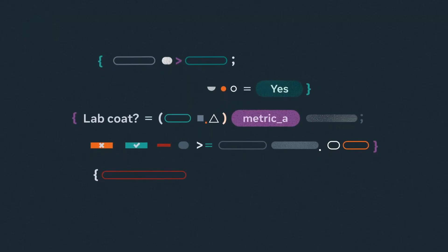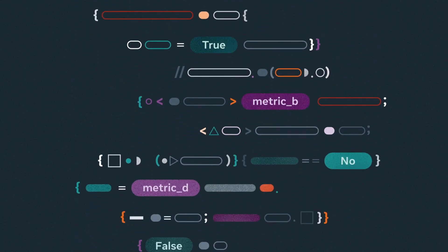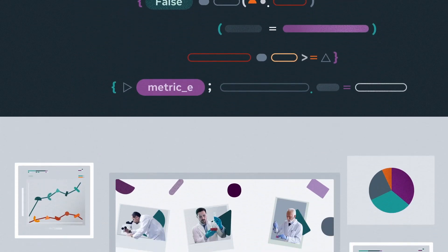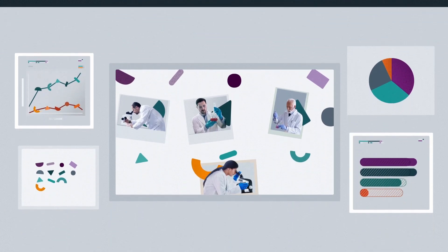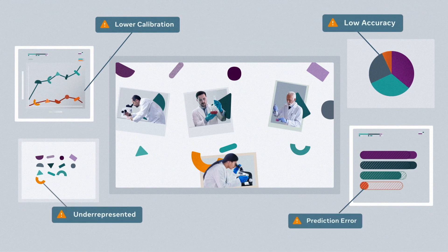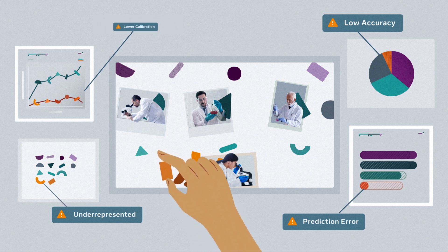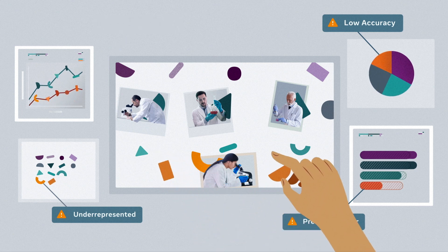Because there's no single fairness metric that can work for every type of AI, it can be challenging to find flaws in the data set. Fairness Flow helps Facebook engineers find the right measurement to understand what may be causing the model to perform in ways that could be unfair.